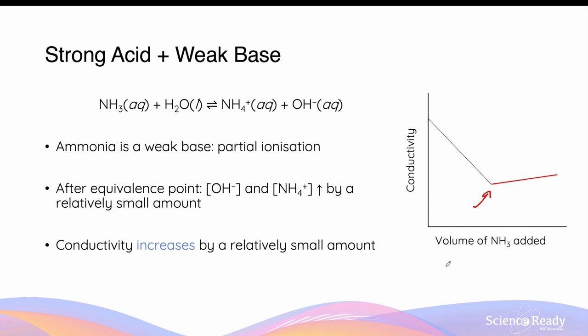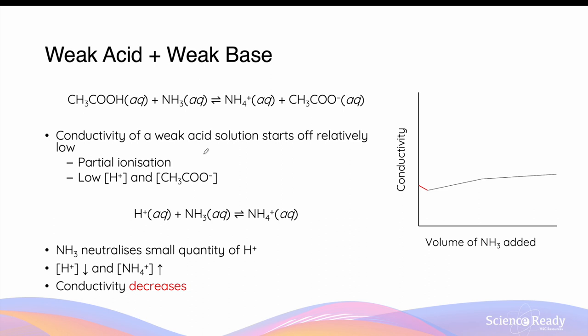The titration between a strong base in the beaker and a weak acid from the burette will also look like this. As an extension example, the conductometric titration between a weak acid and weak base looks vastly different. The conductivity starts off relatively low due to the partial ionization of the weak acid.